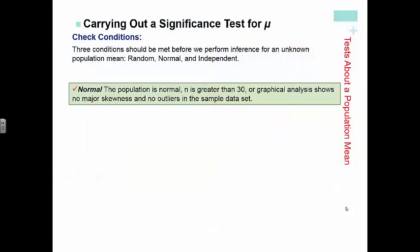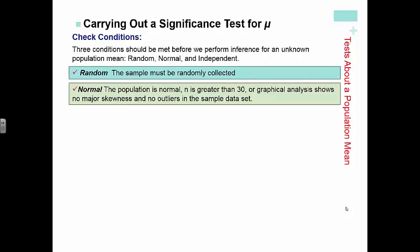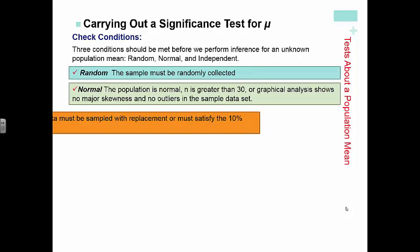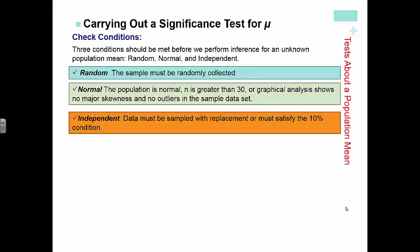Just like with our confidence intervals, we still have to check our conditions. Random — must be from a random sample. Normal — we're checking that either the population is normal, or that n is greater than or equal to 30. Or if neither of those two are satisfied, we can do a graphical analysis to show no major skewness or outliers. We usually check a dot plot, box and whiskers, or a normal probability plot to make sure the data set is not too skewed or doesn't have any outliers. Lastly, we check independence — we want to make sure the data is sampled with replacement, or it satisfies the 10% condition if sampled without replacement.